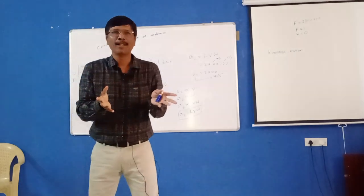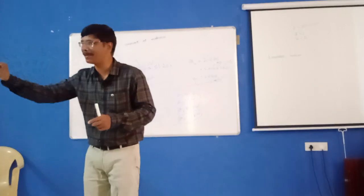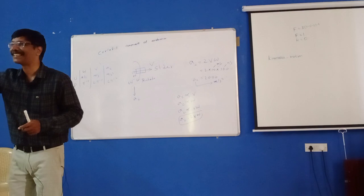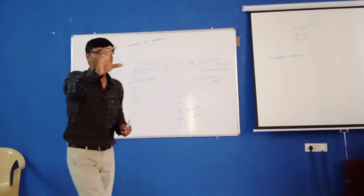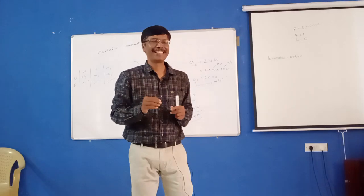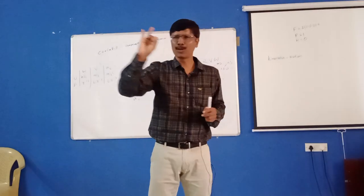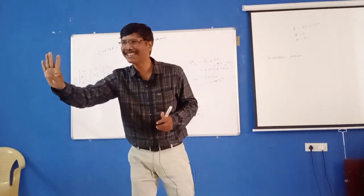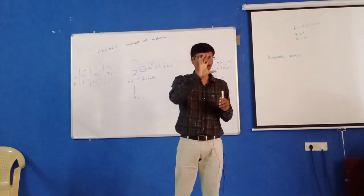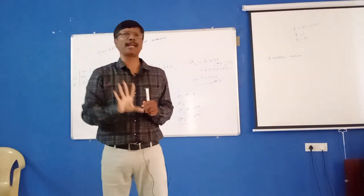Nowadays most of the engineers are blind. They don't know the variables, they don't know the unit, they don't know the dimension. If you want to become an engineer with two eyes, you should know the variable, you should know how to play with the variables, you should know the unit, you should know the dimension. That is the engineering. Engineering is simple.